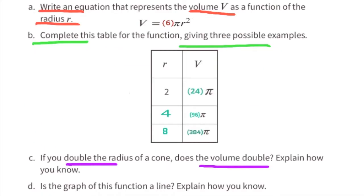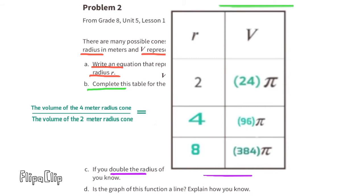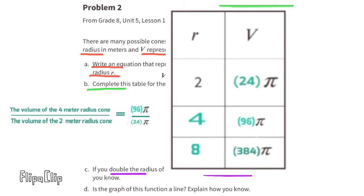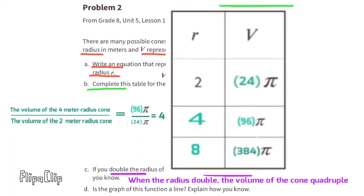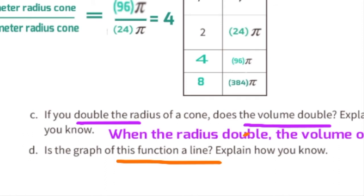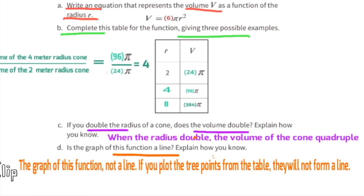Part c: if you double the radius of a cone, does the volume double? Looking at the table, doubling the radius from 2 to 4, the volume goes from 24π to 96π — that's 4 times bigger, not double. So when you double the radius, you quadruple the volume. Part d: the graph of this function is not a line because if you plot the three points from the table, they will not form a straight line.